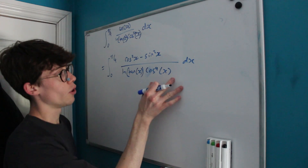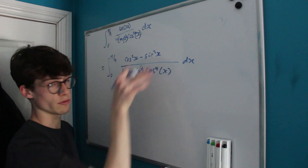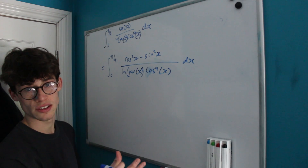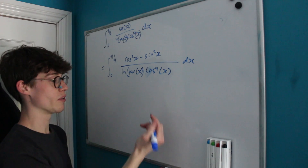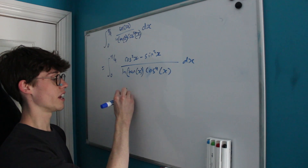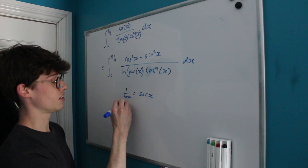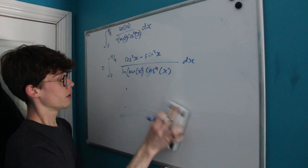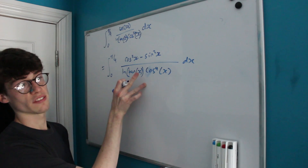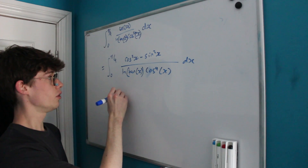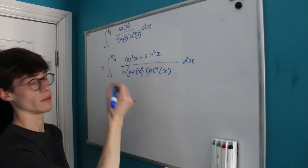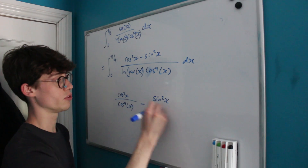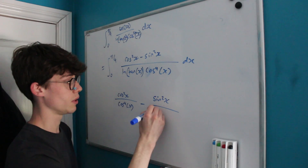Now that we've got cos and sin to various powers in our numerator and denominator, I'm going to split our fraction up and write it in terms of different trig functions — bearing in mind that 1 over cos(x) equals sec(x) and that sin(x) over cos(x) equals tan(x). With that in mind, if we just ignore the ln(tan x) for now, we have cos²x over cos⁴x, and sin²x over cos⁴x separately. We'll put the ln(tan x) back when we rewrite the integral.